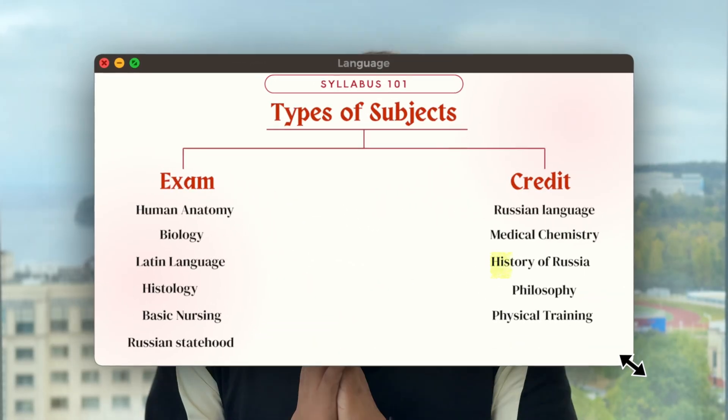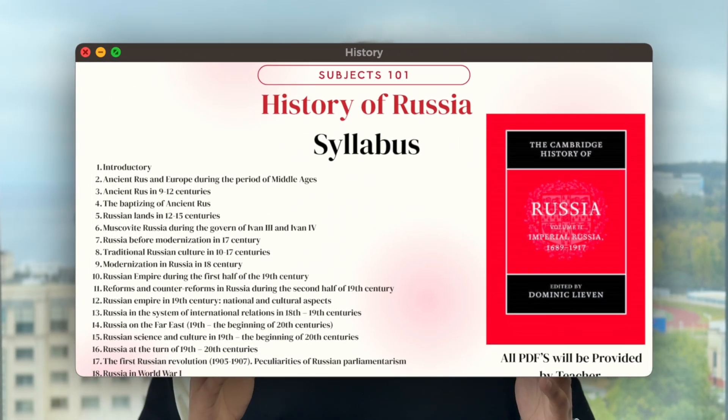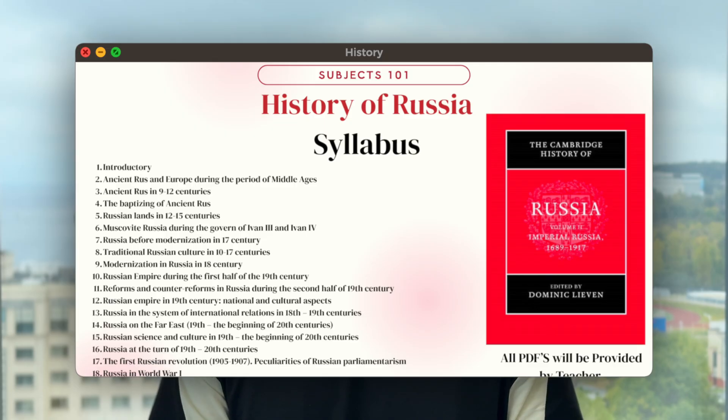The next subject is history of Russia. Again, it is an extra subject. You just need to engage with the teacher, make some presentations, and everything will be sorted. In this subject, you will study topics like the modernization of Russia and Russia in World War One.